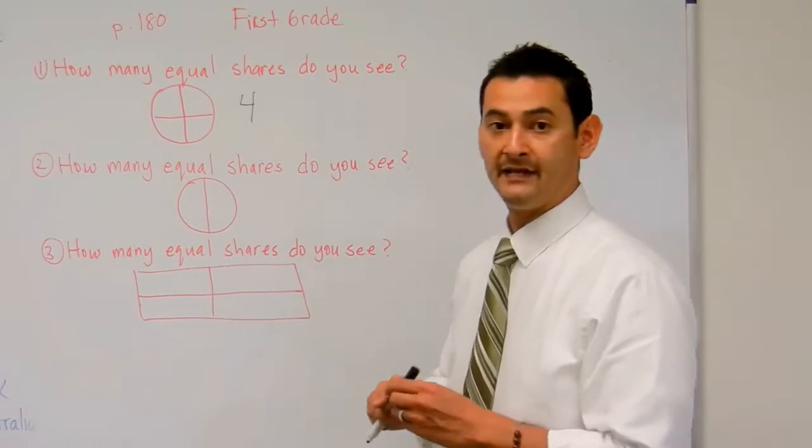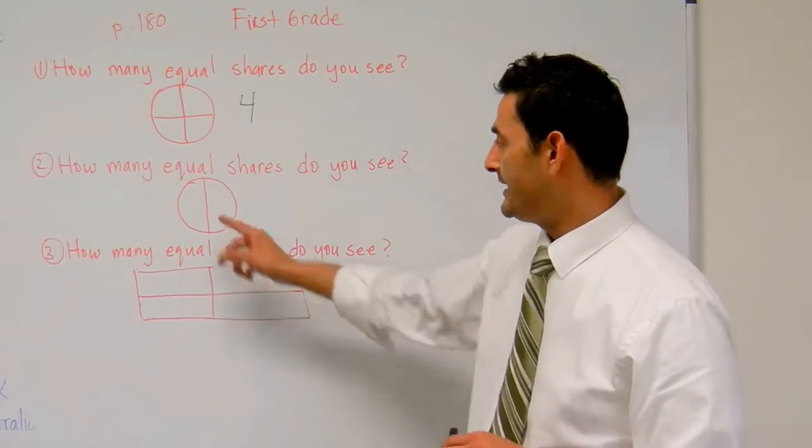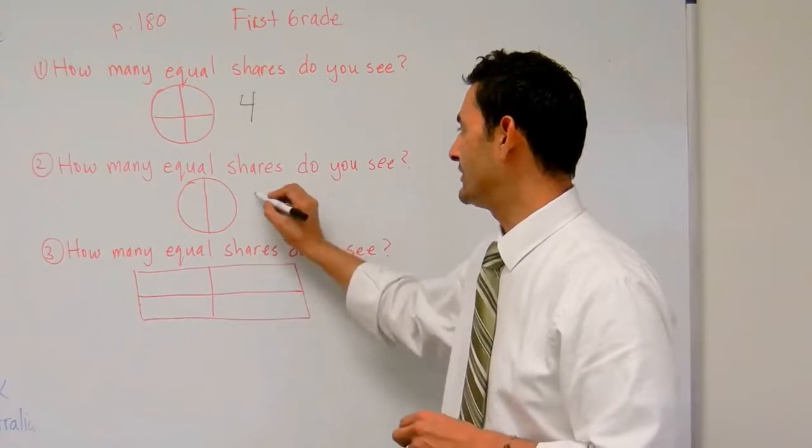Let's take a look at number two. Number two reads, how many equal shares do you see? How many equal shares in this circle do you see? One, two. I see two equal shares.